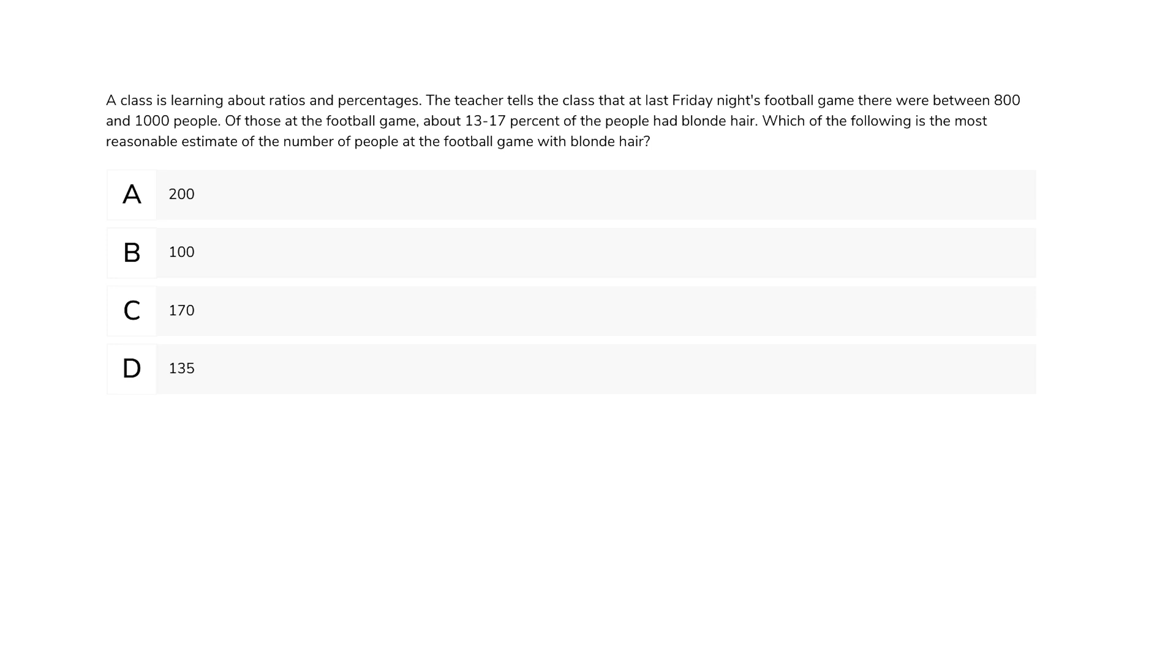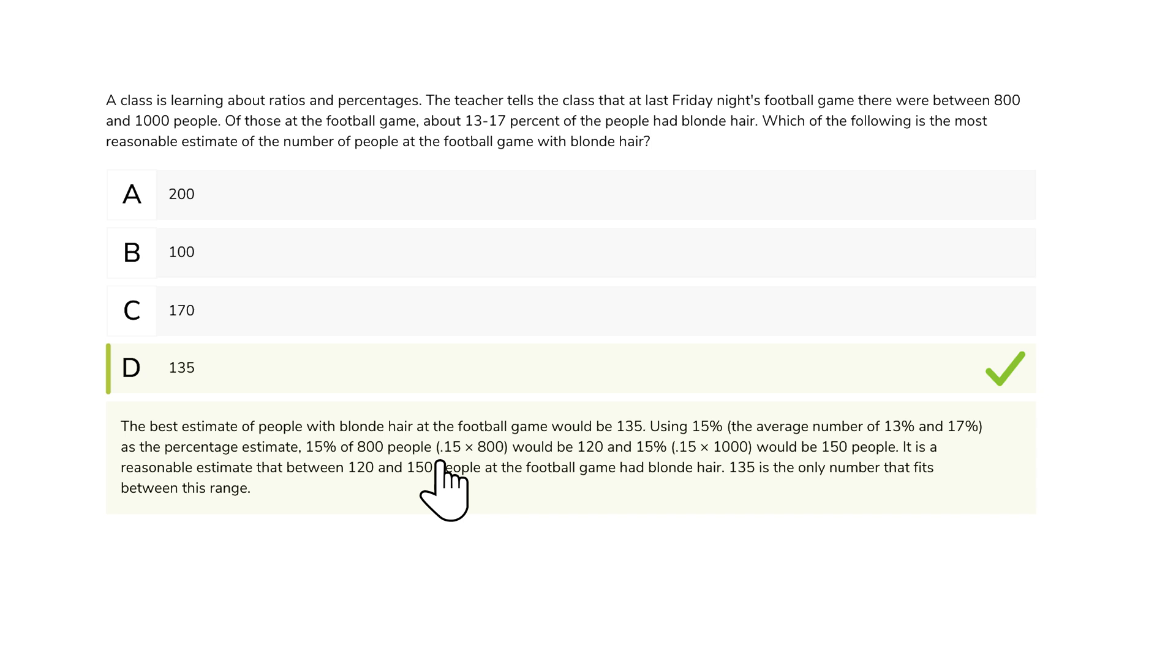We start by using 15 percent, the average number of 13 percent and 17 percent, as the percentage estimate. So 15 percent of 800 people would be 120, and 15 percent of 1,000 people would be 150. It's reasonable to estimate that between 120 and 150 people at the football game had blonde hair. 135 is the only number that fits within this range, so this is the best choice.